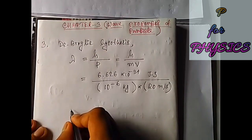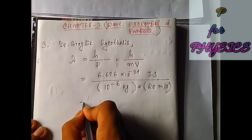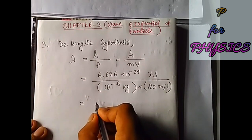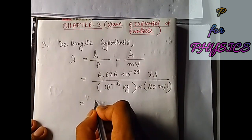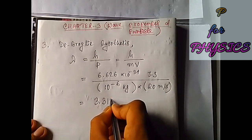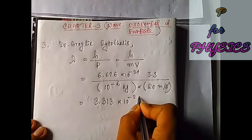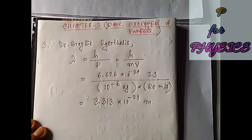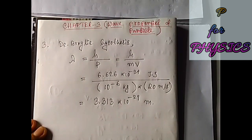And if we calculate this, we will have the value of the wavelength, which will be 3.313 × 10^-29 meters, which is very small.